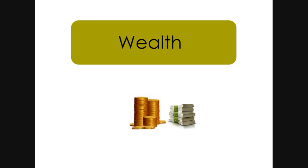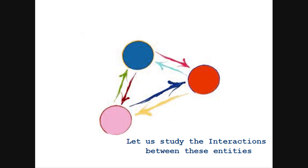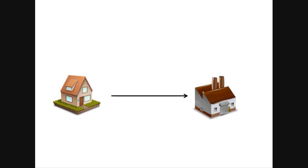Let us try and understand the interactions that take place between these entities. There are the households and then there are the firms or industries. One of the very basic transactions that take place between households and industries is that households supply manpower to industries. We get up every morning and go to our respective places of work, whether they be firms, industries, offices, schools, or whatever.